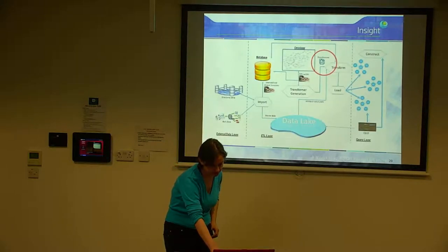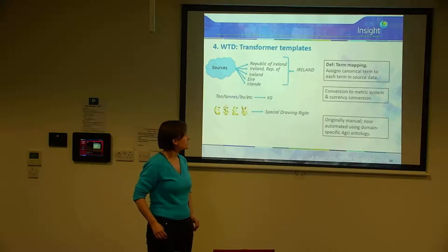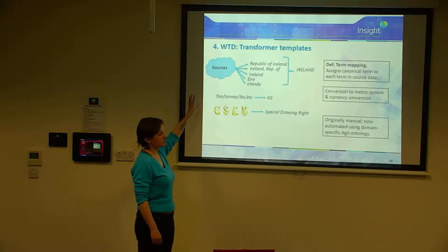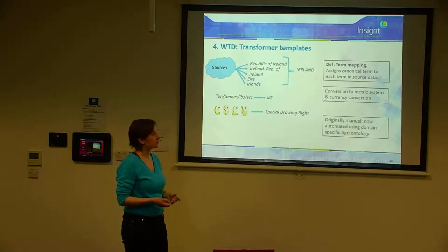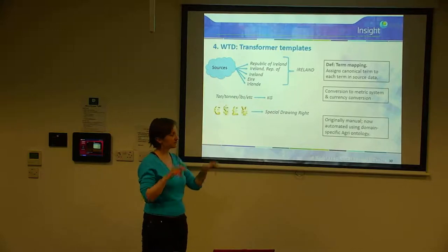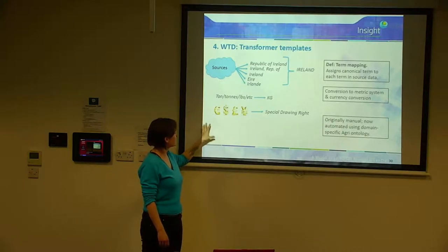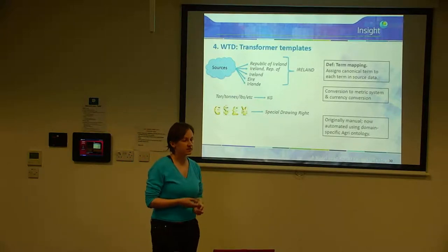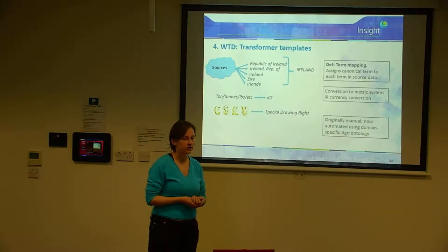The transformer templates serve the purpose of term mapping — assigning a canonical term to each term in the source data. For example, multiple data sources might use 'Republic of Ireland' or 'Ireland Repov' to mean the same thing; using the transformer template, all of these get mapped to just 'Ireland'. The templates also automatically convert units to the metric system and currencies to the IMF Special Drawing Right. Originally writing these templates was a manual job, but once datasets were any decent size it didn't scale, so I wrote a process to automate it using a domain-specific agri-food ontology built for that purpose.